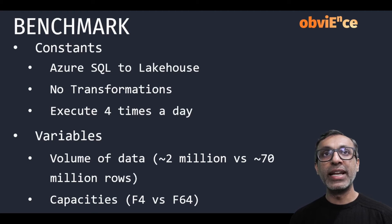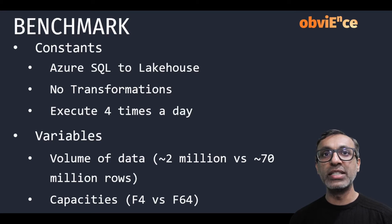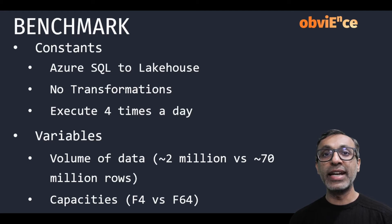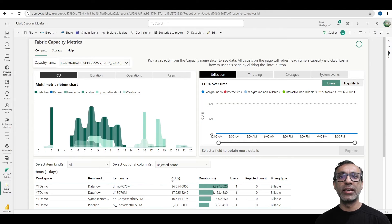To create a benchmark, I created some constants. I'm ingesting data from Azure SQL to Lakehouse — just copying data with no transformations, pure data movement. I executed this process four times a day so I can average the duration and cost. The variables are: volume of data — I tested with a table of about 2 million rows and another with 70 million rows — and two different capacities: F64 (the trial capacity) and F4. To get measurements of CUs and duration, I'm using the Capacity Metrics app, which is a free app provided by Microsoft.